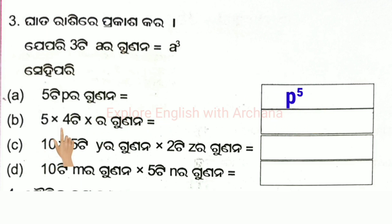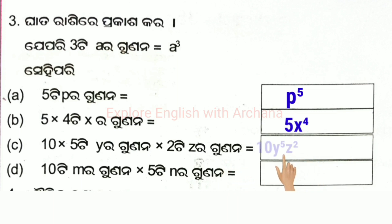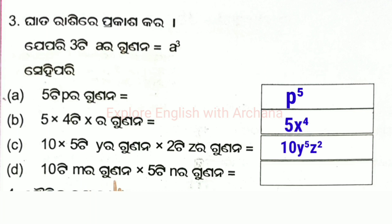The difference between x² is equal to φ⁴. 10, y to the power 5, z to the power 2, z square. 10m to the power 10, n to the power 5 — this is the 4th number.